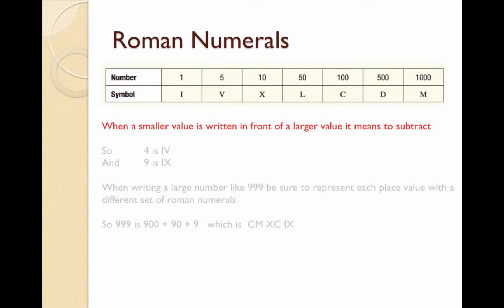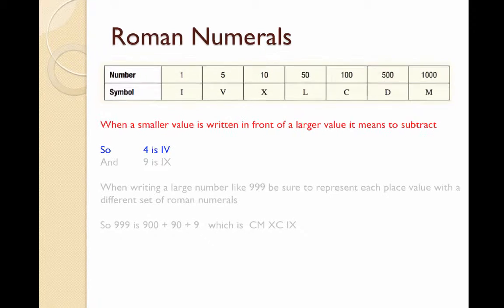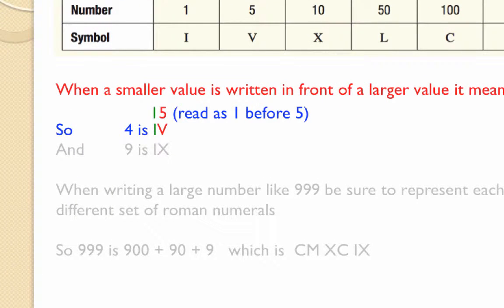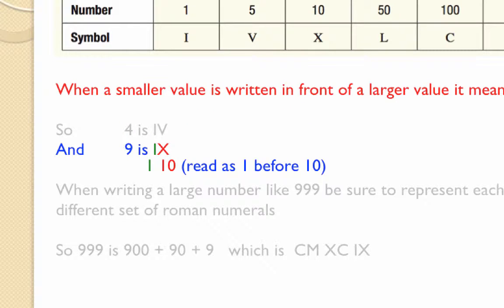Okay, how do we write 4 and 9 then if we can't write 4 ones in a row? Well, when a smaller value is written in front of a large value it means to subtract. So if we want to write 4, we write it as IV which is read as 1 before 5. 9 is IX which is 1 before 10.